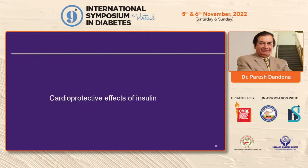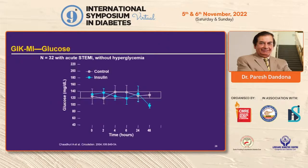This led to experiments on the cardioprotective effects of insulin. In a group of patients with ST-elevation myocardial infarction, insulin was infused at 2.5 units per hour with the appropriate amount of glucose to maintain euglycemia, so glucose concentrations remained constant.